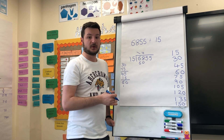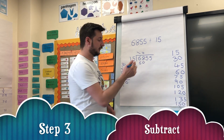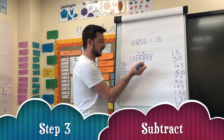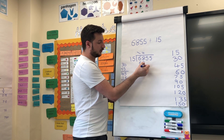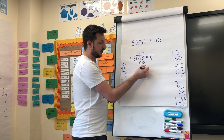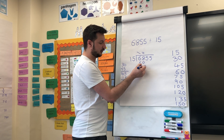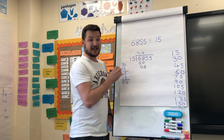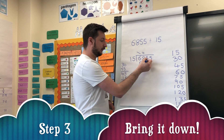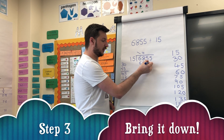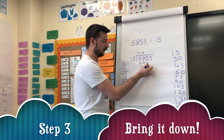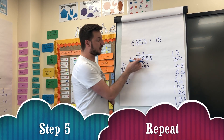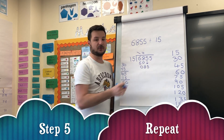Next step: subtract. We're going to do sixty-eight take away sixty. Eight take away zero is eight. Six take away six is zero. Next step: bring it down. We're going to bring down the five. And now we repeat — but instead of looking at the dividend, we're going to look at the number eighty-five.